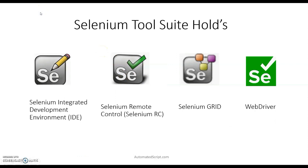Selenium holds four major components: Selenium IDE for record and play; Selenium RC (Remote Control), which used an HTTP proxy to trick the browser into believing Selenium Core and the web application came from the same domain; Selenium Grid for executing automated scripts on different browser versions simultaneously; and the WebDriver, which was the first cross-platform testing framework that would control the browser from the OS level.